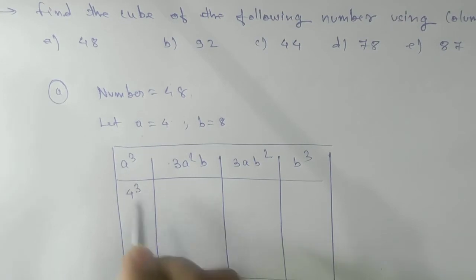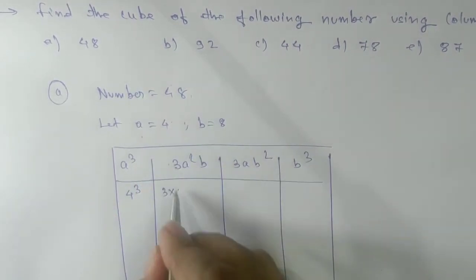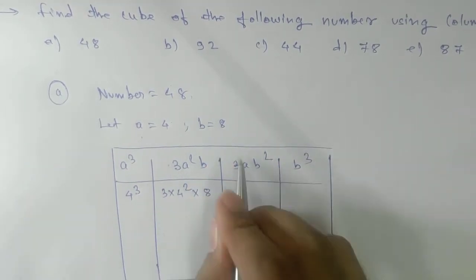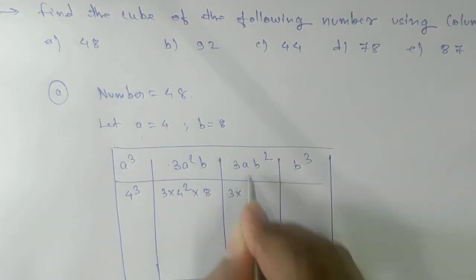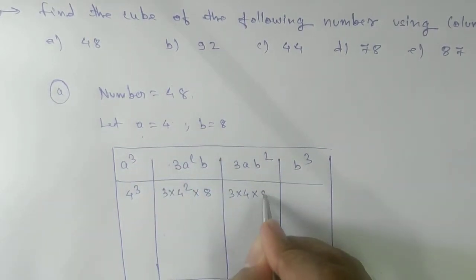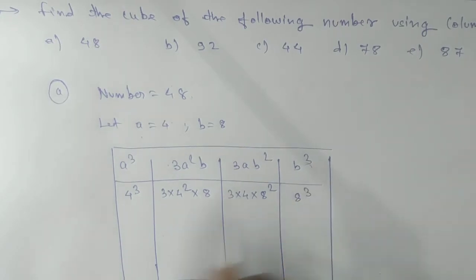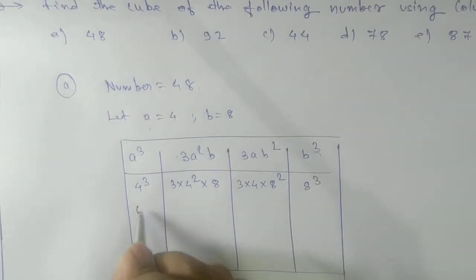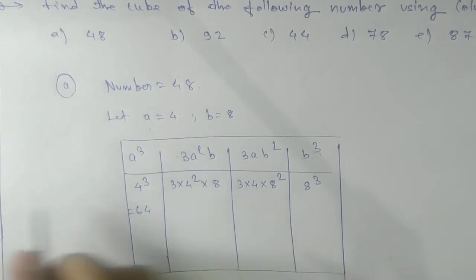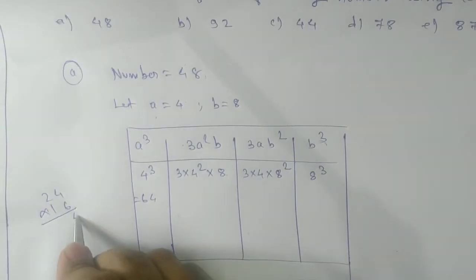Now your a³, this is 4³. 3 into a, a means 4, 4² into b, b means 8. Next, 3 into a, which is 4, and this is your b², that is 8². B³, that is 8³. 4³ means 64.